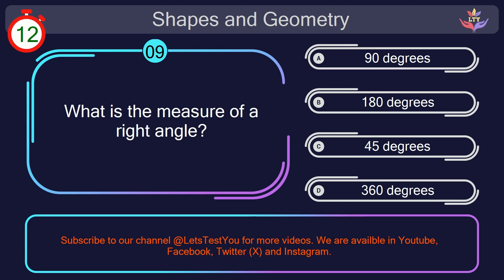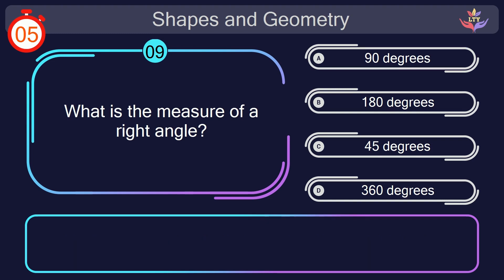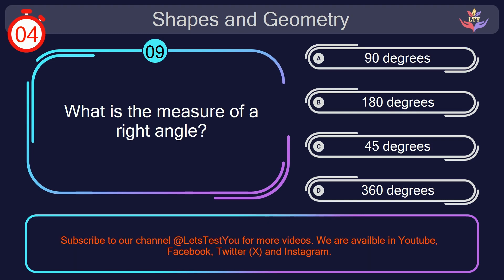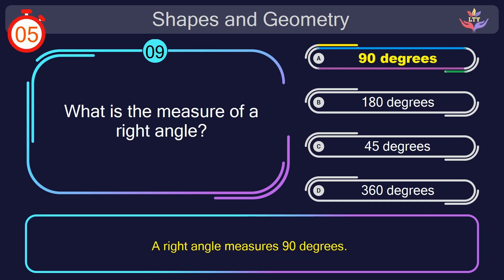Question number 9. What is the measure of a right angle? Your countdown started. 1, here we go. The correct answer is option A. 90 degrees. A right angle measures 90 degrees.